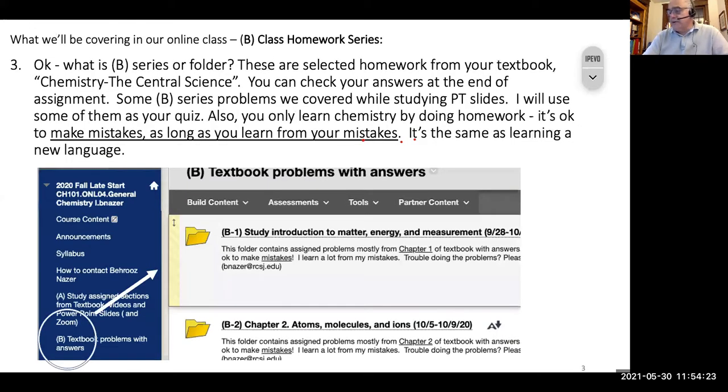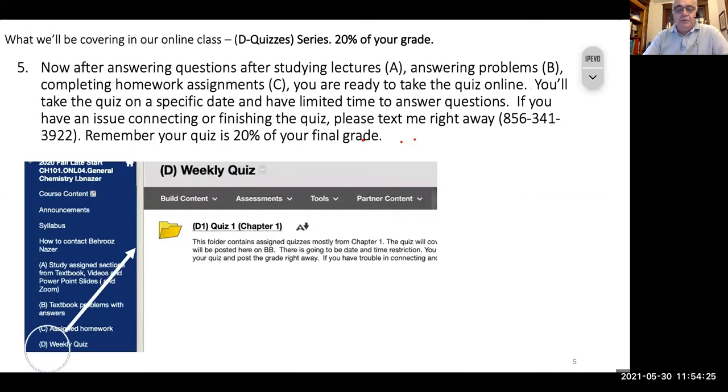Then we're looking at the quizzes at this point. So once you studied the A, did some homework in B, did homework in C, then you need to take this quiz. Typically the quiz is between 30 to 50 questions. They're all multiple choice. I'll usually post the list and the deadlines and everything on the calendar version of the Blackboard. But you need to do the quizzes, and that takes a big chunk of your grade. It's 20%.